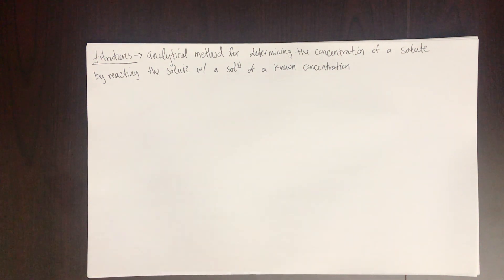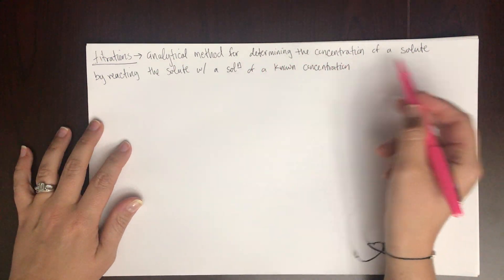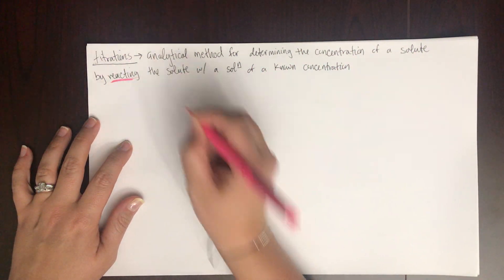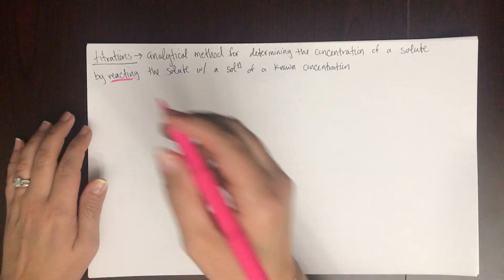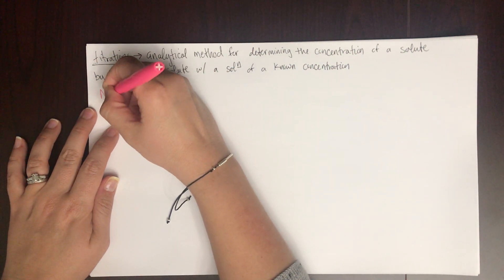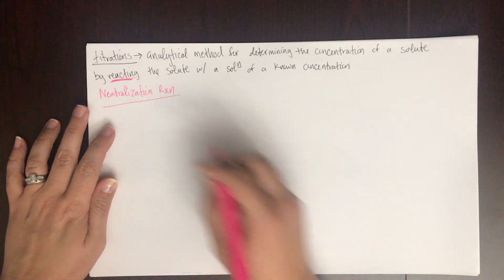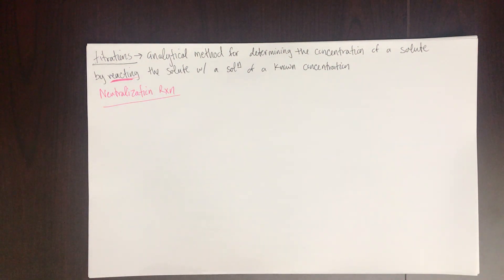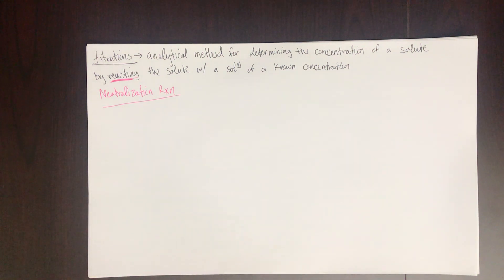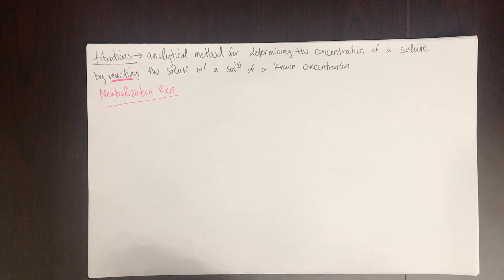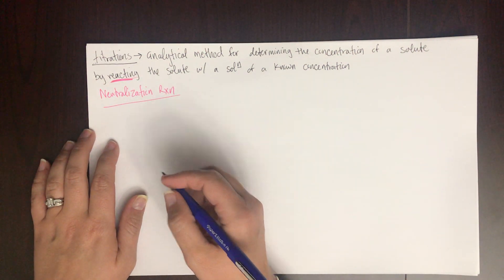The reaction happening in a titration is a neutralization reaction — one solution is the acid and the other is the base. Let's write out an example problem and then go through and label all of the components individually.